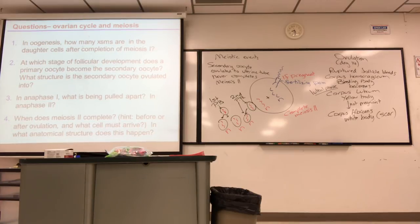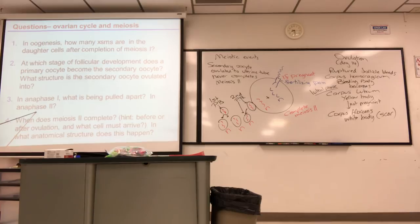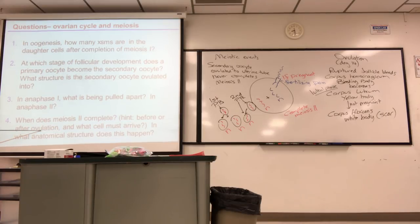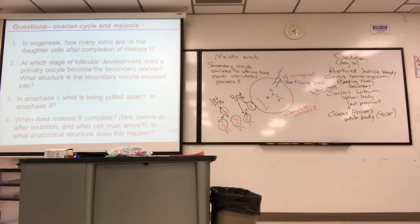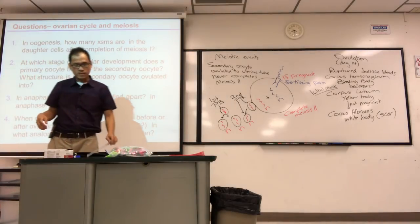At anaphase I, you're pulling apart the homologous chromosomes. At anaphase II, you're pulling apart sister chromatids. When does meiosis II complete? It doesn't always complete — only after ovulation. The oocyte is ovulated, waits in the uterine tube, because sperm must arrive. The anatomical structure where fertilization typically happens is the ampulla of the uterine tube.